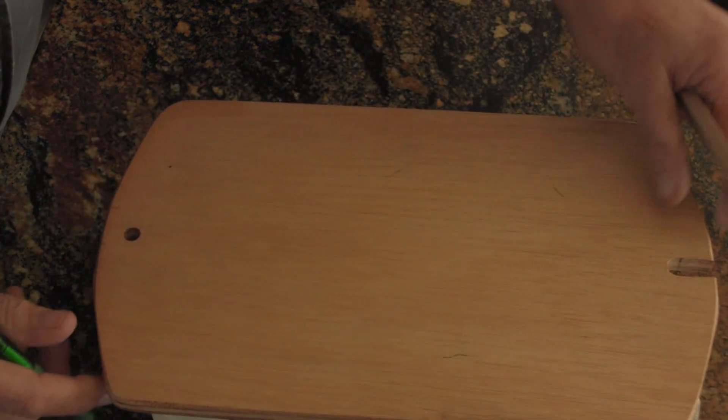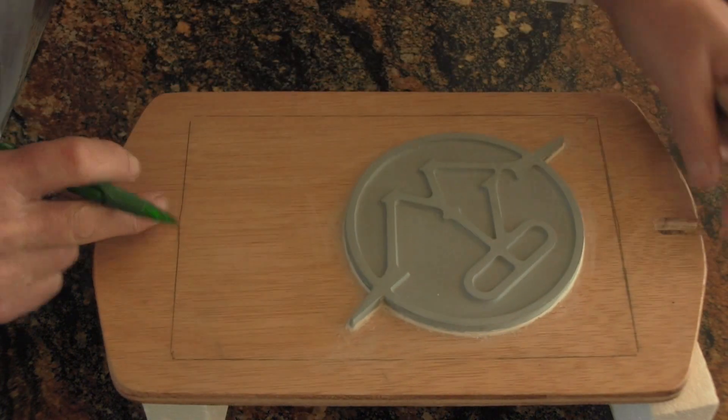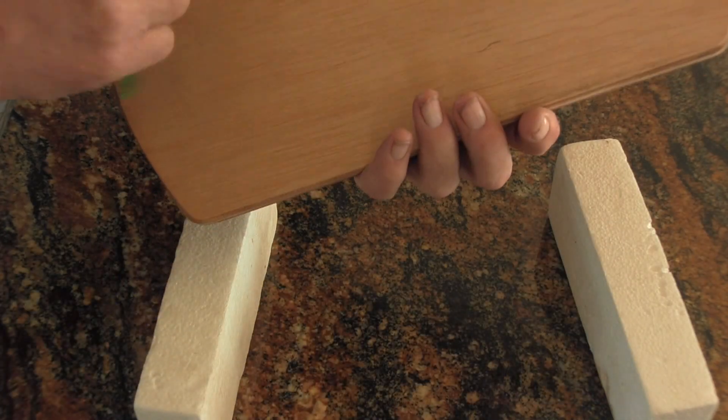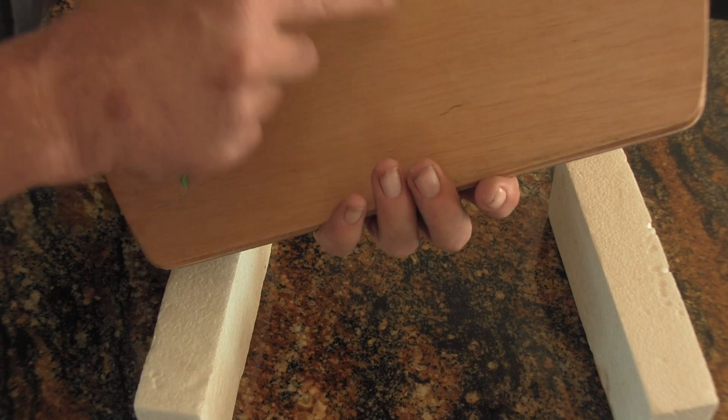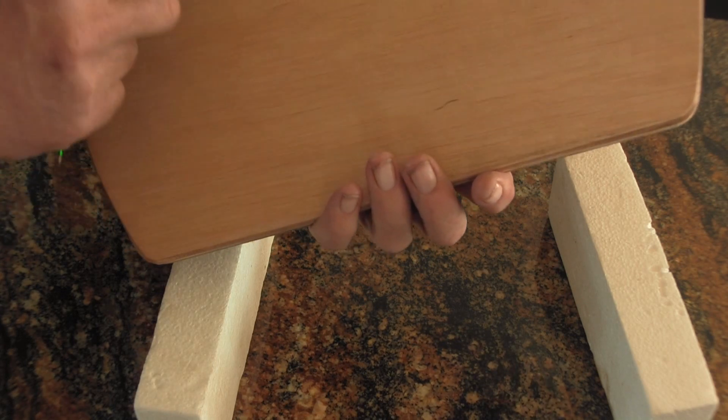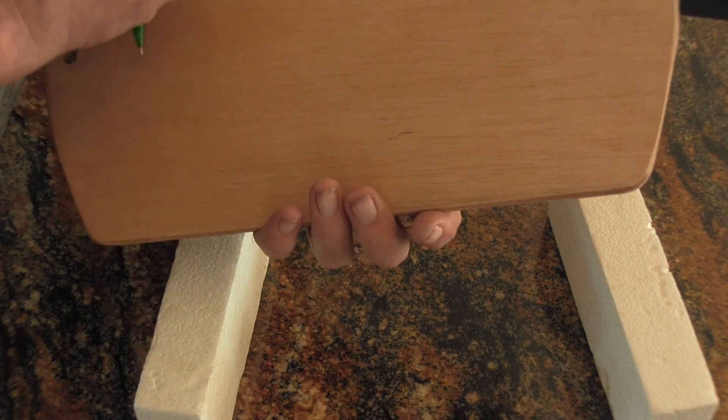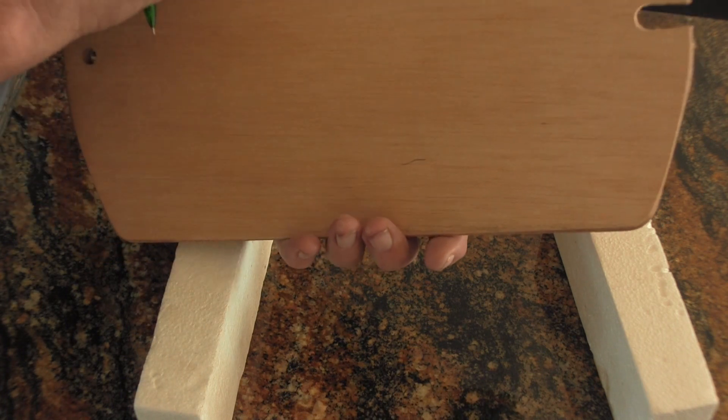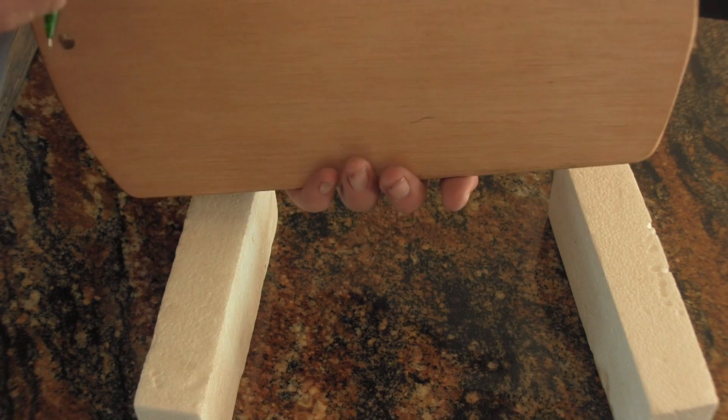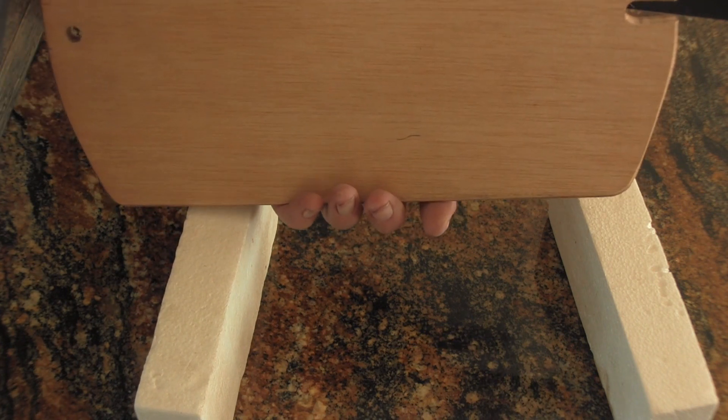From there, measuring the diameter of this, I got the radius. I can swing three arcs off of those lines to get to the center, and then I can locate my, where my three bosses or pins are going to go. And that will allow me to—